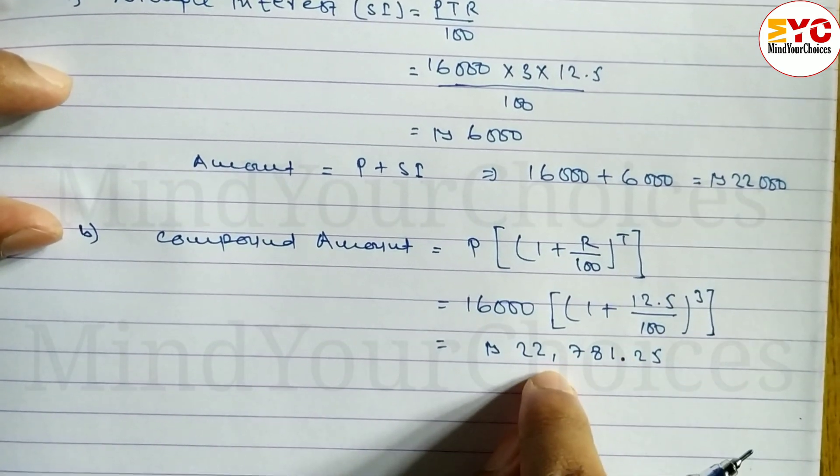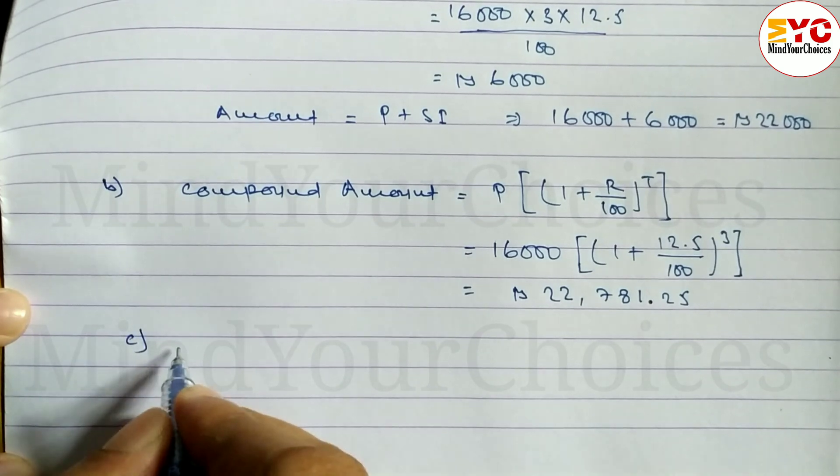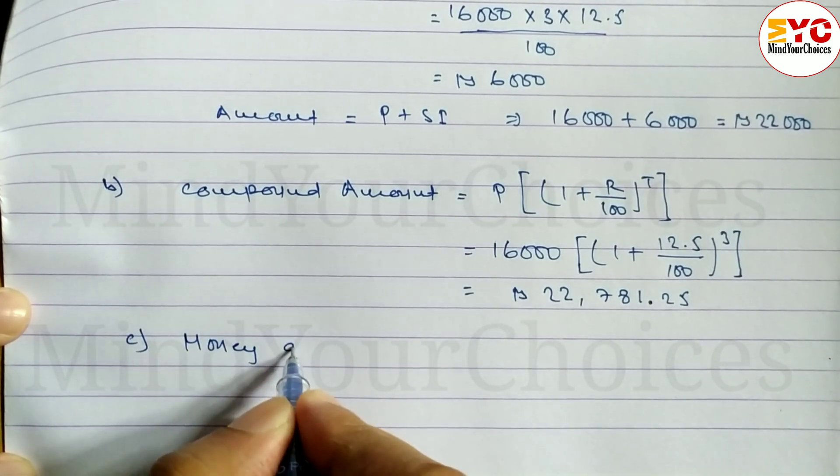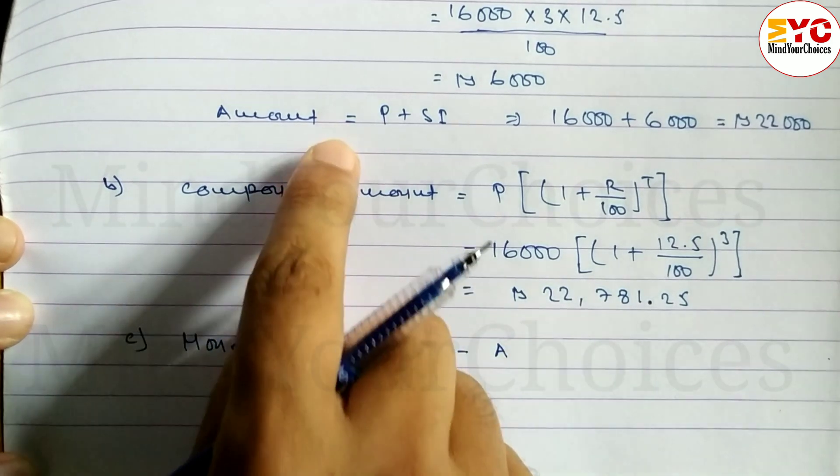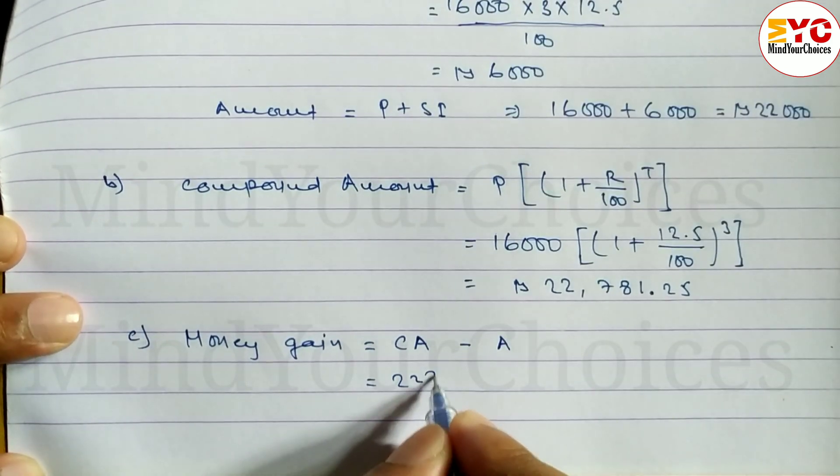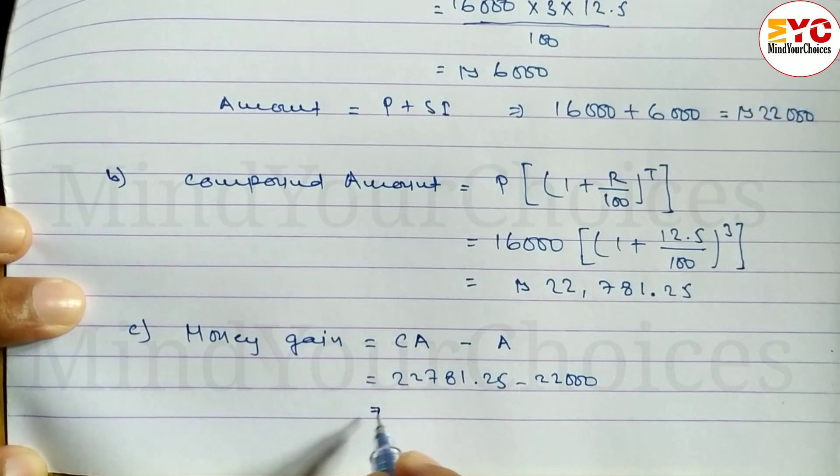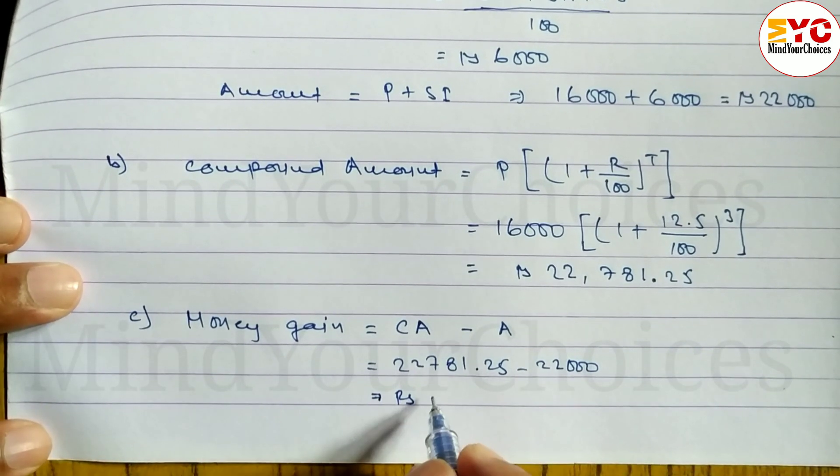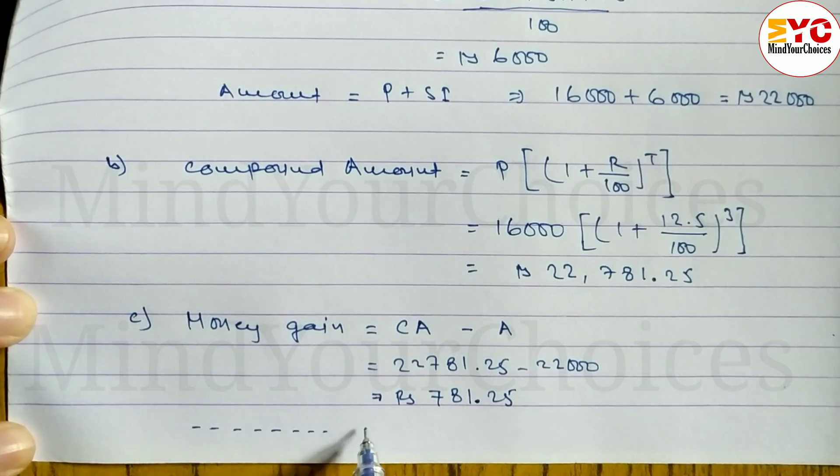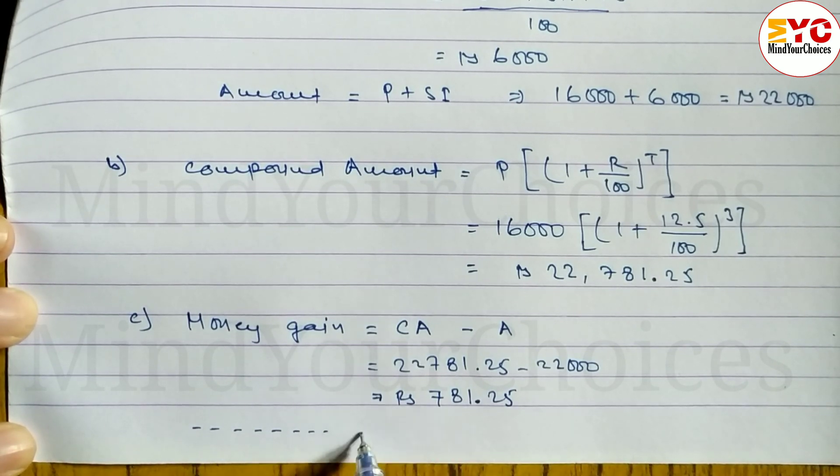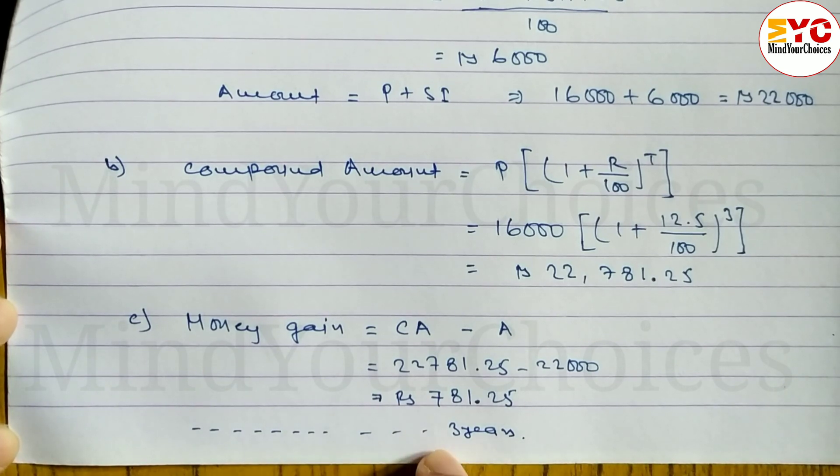For part (c), the gain = Compound Amount - Amount = Rs. 22,781.25 - Rs. 22,000 = Rs. 781.25. He will gain Rs. 781.25 after 3 years.